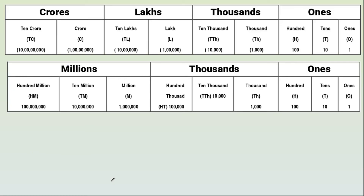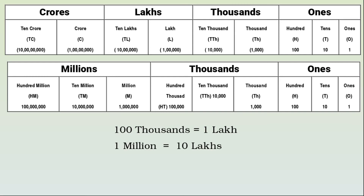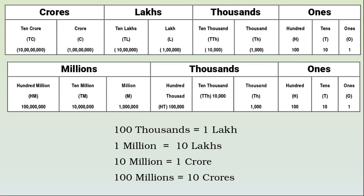Here they give two tables. The first table represents the Indian number system and the second one represents the international number system. By comparing these two tables, we can see that 100,000 equals 1 lakh, 1 million equals 10 lakhs, 10 million equals 1 crore, and 100 million equals 10 crores. I hope you understand this concept. Thank you.